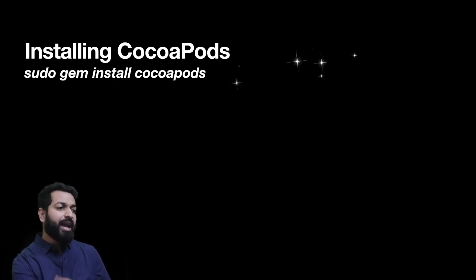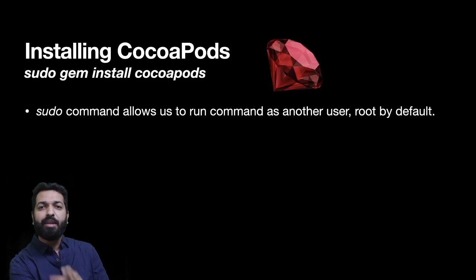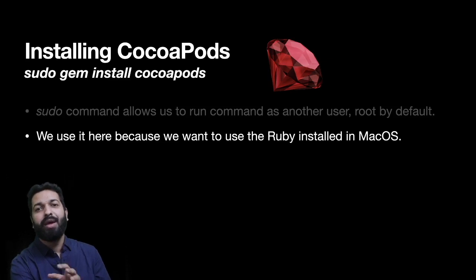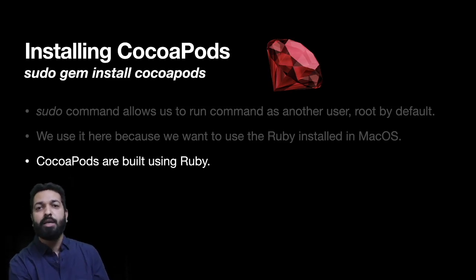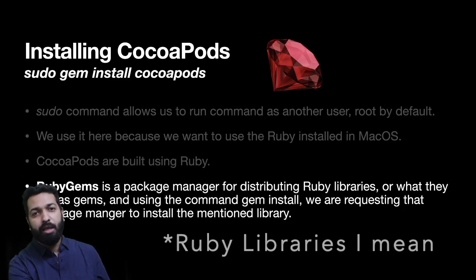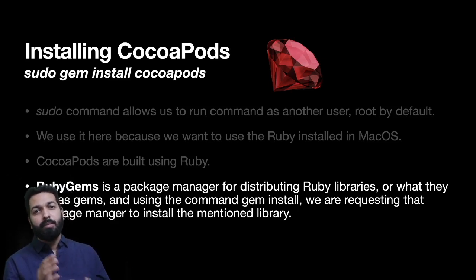Now let's see how installing CocoaPods happens. The command sudo gem install CocoaPods is used — but why are we using sudo? Using sudo we can run commands as another user, which is by default the root. We use sudo here because we want to access the Ruby installed in macOS, and that is because CocoaPods is built using Ruby. As for gem install: CocoaPods libraries are referred to as gems, and to install them we use the RubyGems package manager, which distributes Ruby libraries. So using sudo gem install CocoaPods, we ask that package manager to install the CocoaPods library in our system.